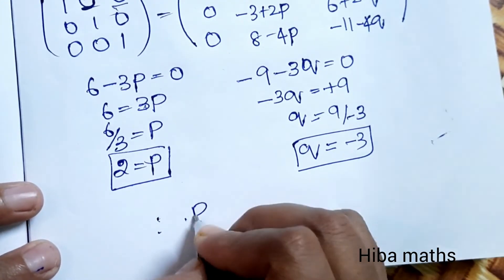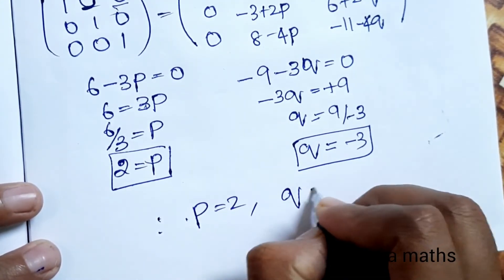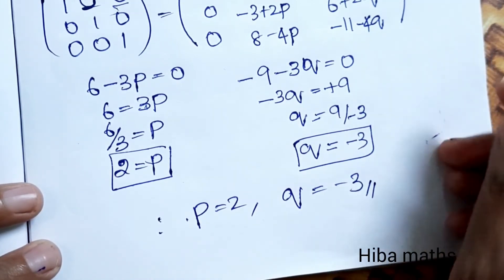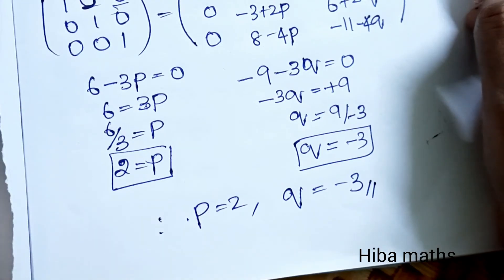Therefore P is equal to 2 and Q is equal to minus 3. This is the answer. Easy to understand the value. Thank you so much for watching.